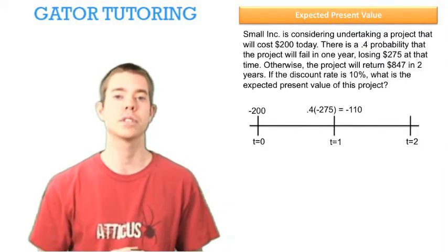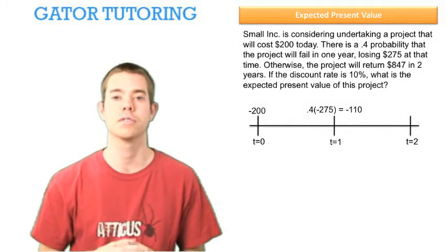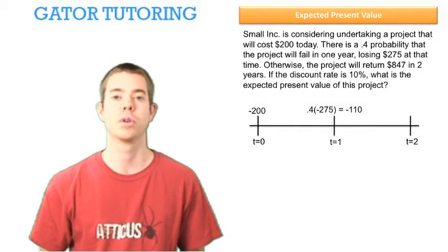In time period one, we have a 40% chance of receiving negative $275, so our expected value is a negative $110.